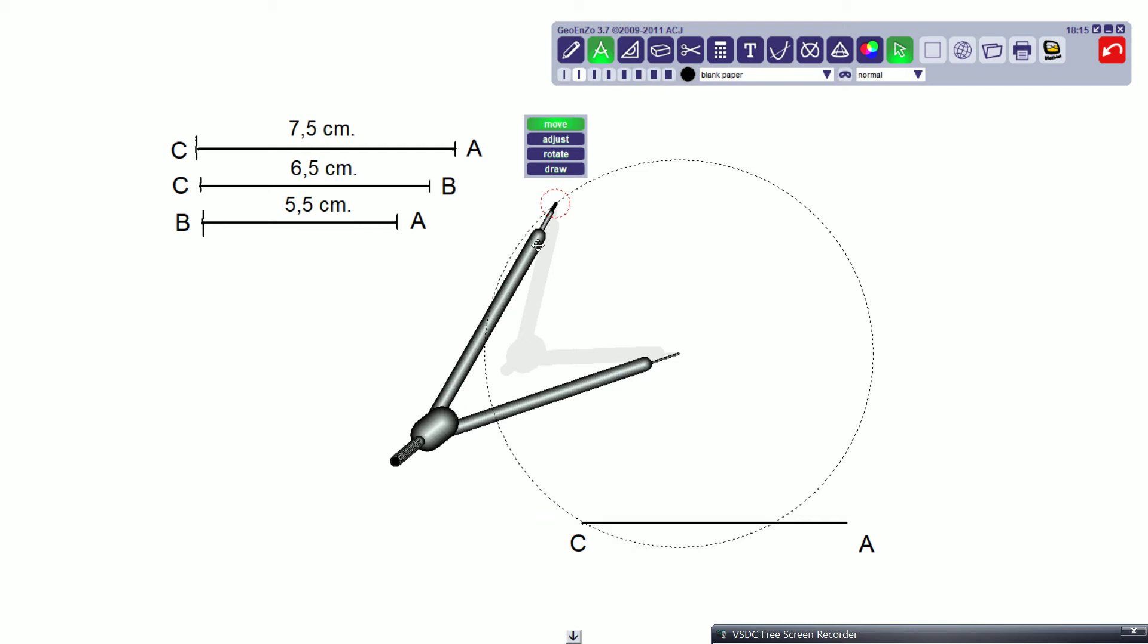So here we have our compass and these are the measures of the sides of our triangle that we have to draw for our sheet 2. I already have the side CA that is the bottom side of the triangle.